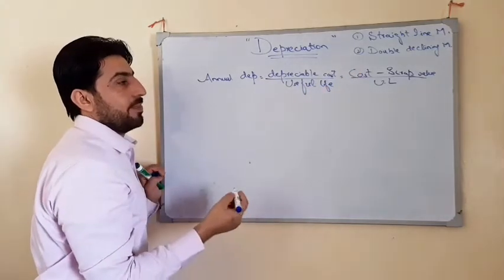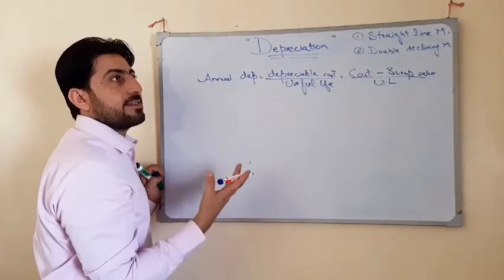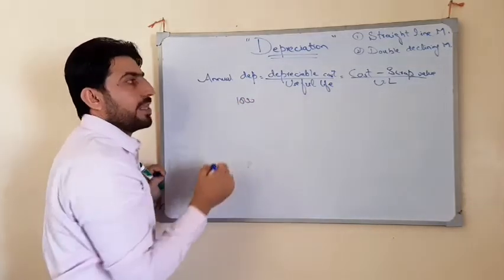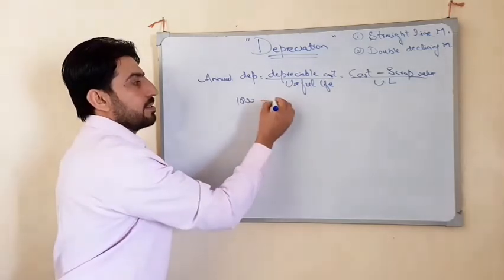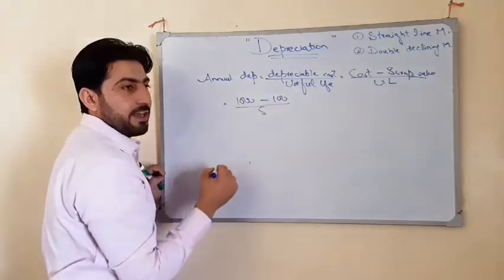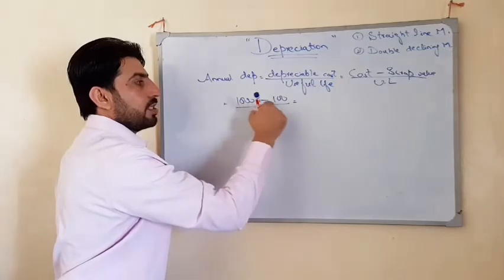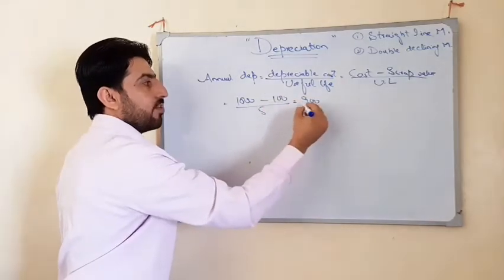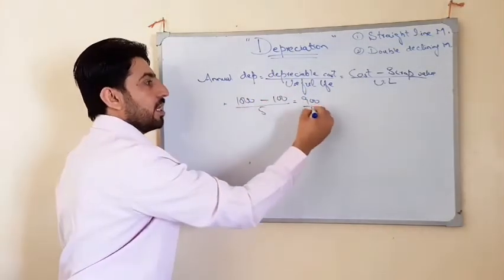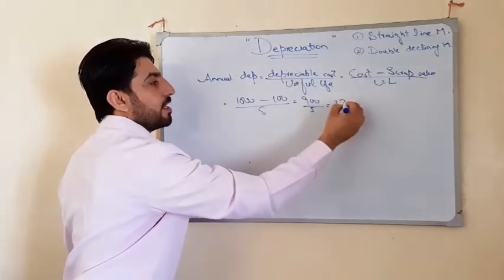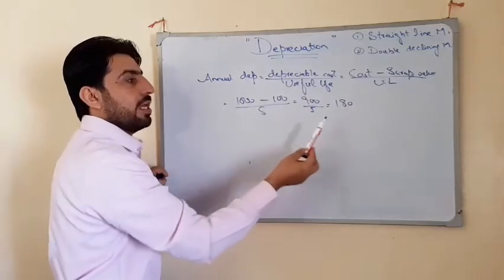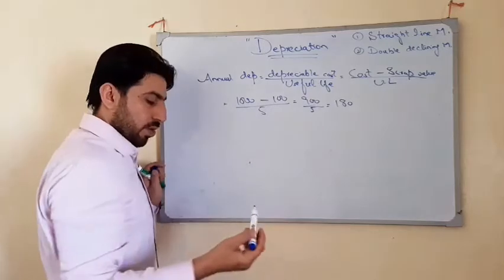Let's take an example. Let's say Ali purchases a piece of equipment for rupees 1,000 and the scrap value is 100. The useful life is 5 years. So 1,000 minus 100 equals 900, which is the depreciable cost. 900 divided by 5 equals 180. So using the straight line depreciation method, every year the depreciation value is 180.